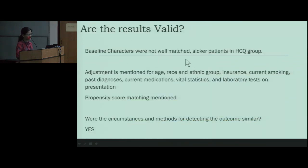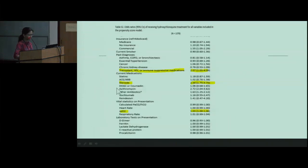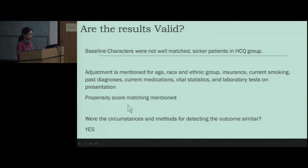The baseline characteristics did not appear to be well matched — the HCQ group had slightly sicker patients, which is expected in a cohort study. Therefore, for calculating results they adjusted for age, race, insurance, smoking, past diagnoses, current medications, vital statistics including PF ratio, saturation at baseline, and lab tests. Propensity score matching was also done. Propensity score is basically a method to create an imaginary control group and exposure group by assigning a propensity score to each patient and matching them based on those scores — trying to find which patient is probable to be in the HCQ group versus the non-HCQ group.